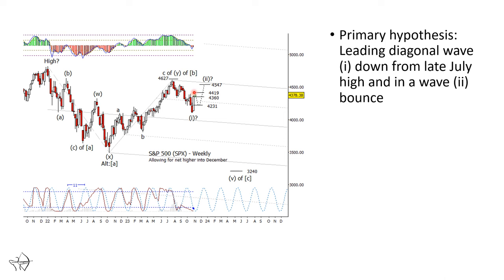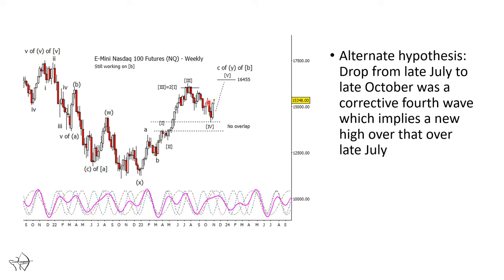But before we get to that, let's talk about what the alternative is. So the primary is a rise up into a corrective wave for a lower high in December. An alternate, and I'm using the NASDAQ for this because I think it has a better case for the alternate, and that would be that there is a new high over the July high in late December. And that is just because while this has the same overall overlapping form, which could be a leading diagonal, but also could be just a corrective move.